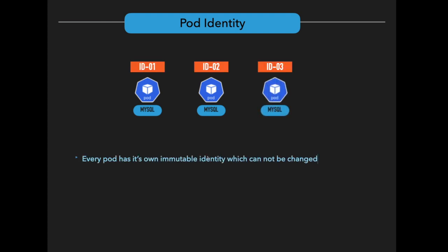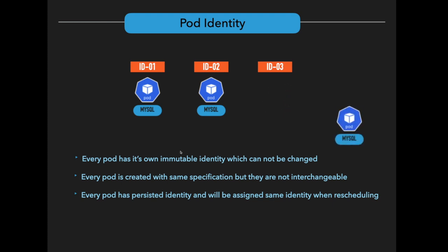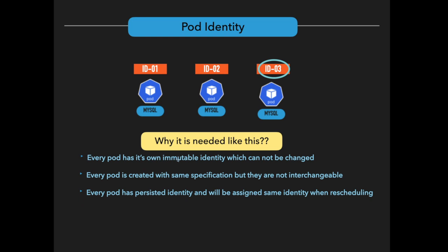Every pod has its own immutable identity which cannot be interchanged. Every pod is created with the same container specification, but they are not interchangeable. Every pod has a persisted identity and will be assigned the same identity when it is rescheduled. This means whenever a pod dies and a new pod is created, the identity will not change — the same identity is assigned to the new pod.